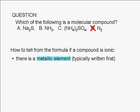Let's look at our choices. In choice A, Na is the symbol for sodium, which is a metallic element. So we know that the compound in choice A, sodium sulfide, is ionic, not molecular.